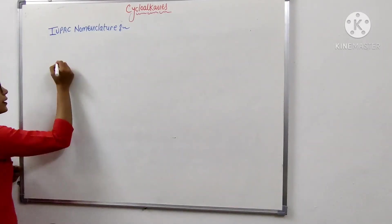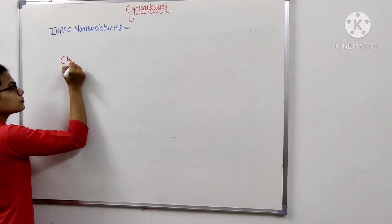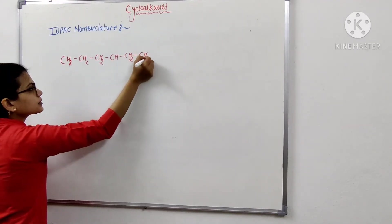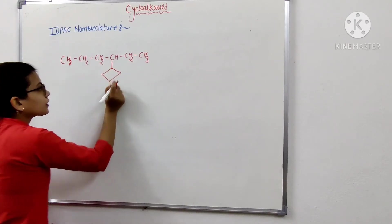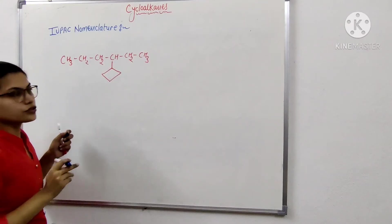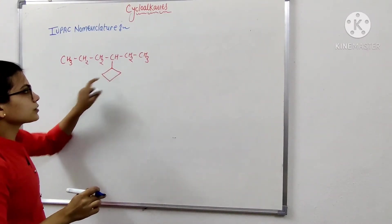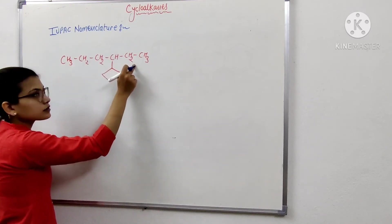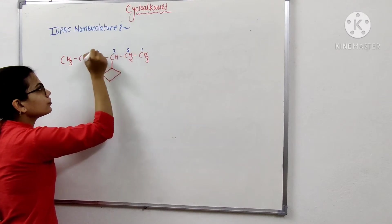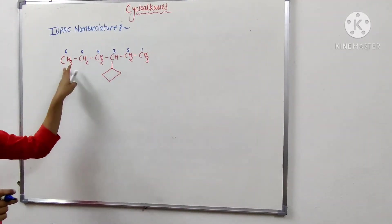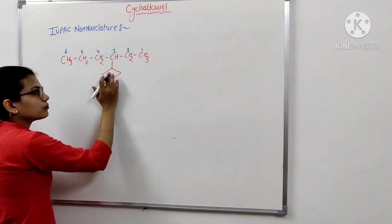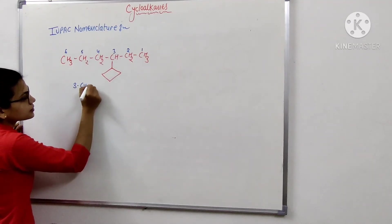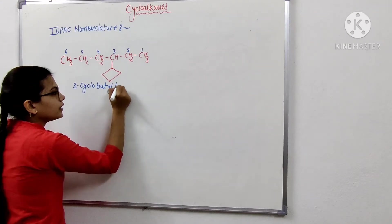For example, consider a structure with six carbon atoms in the chain and a four-member ring attached. In this structure, there are six carbon atoms and one four-member ring. Numbering is started from the carbon nearest to the ring: 1, 2, 3, 4, 5, and 6. The cyclobutyl ring is present at the third carbon atom, so its name is 3-cyclobutylhexane.